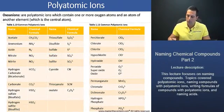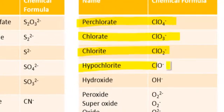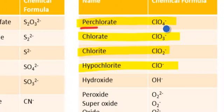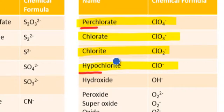Furthermore, when we have more than two oxoanions in a series — as we see here for perchlorate, chlorate, chlorite, and hypochlorite — the prefix per-, meaning 'more than,' is given to the polyatomic ion that has one more oxygen than the polyatomic ion that ended in ATE. Furthermore, the hypo- prefix, meaning 'less than,' is given to the polyatomic ion that has one less oxygen than the polyatomic ion with the ITE ending.